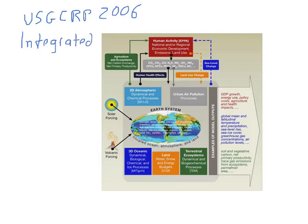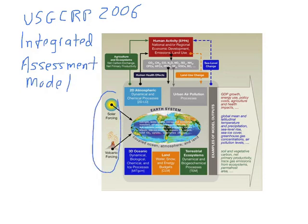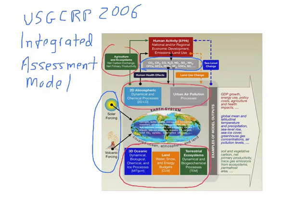We talk a good bit in the course about what integrated assessment models are and what they do. This is a cartoon of one of them. And what it does is to take natural causes of climate change, but also human causes of climate change, such as CO2 and other things, and ask how do these interact with the ocean, with the land, with the living things, with the atmosphere, with air pollution, and with the things that we grow to eat, the logging we do, and other things.